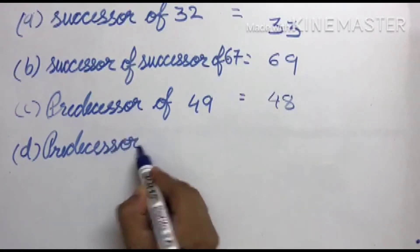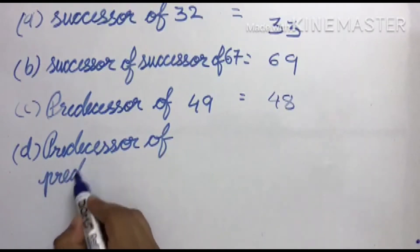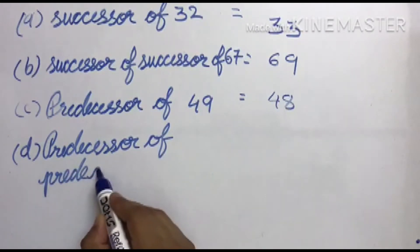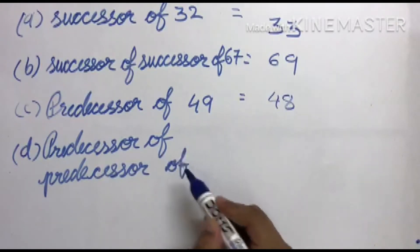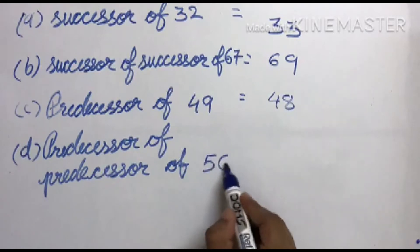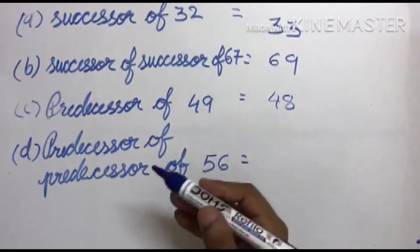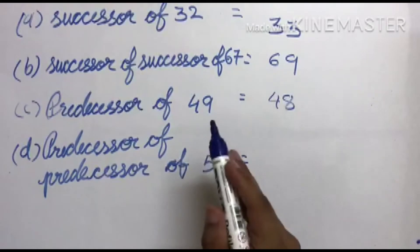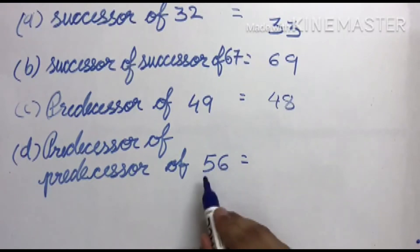Fourth number: predecessor of predecessor of 56. Predecessor का भी predecessor — तो इसका predecessor क्या हुआ? 55. और 55 का predecessor क्या हुआ? 54.